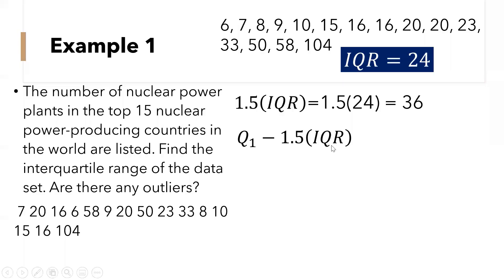So the next step that we need to do is to subtract 36 from the quartile 1. So quartile 1 is 9 minus 36 is equal to negative 27. Any data less than negative 27 is an outlier. So there is no data which is less than negative 27, so meaning we don't have an outlier here.